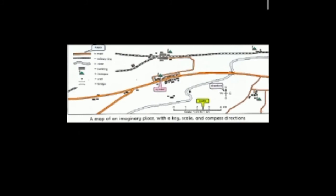Now you can see the picture easily. A map of an imaginary place with a key, scale, and compass directions. You can easily learn that the symbol where the mosque is. Then you can put a picture which you can find in this area.